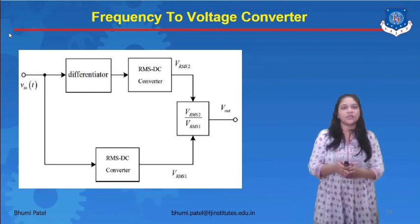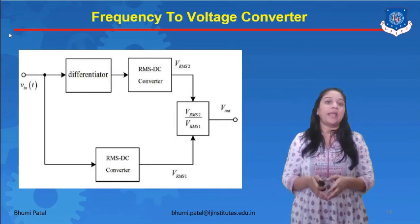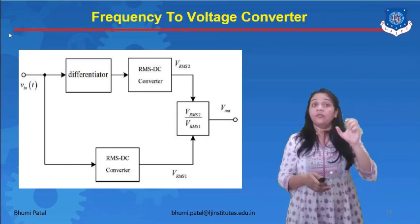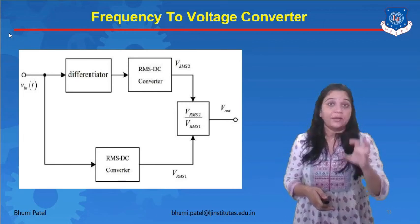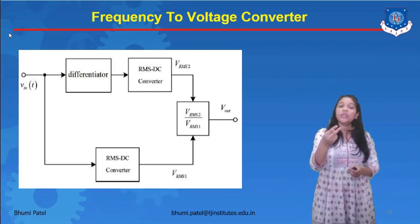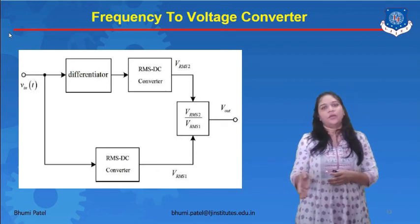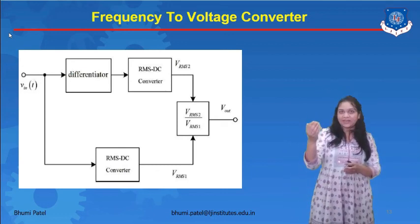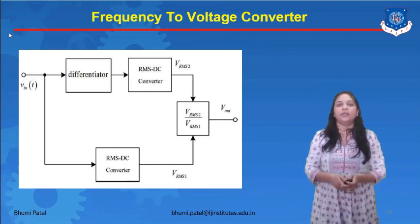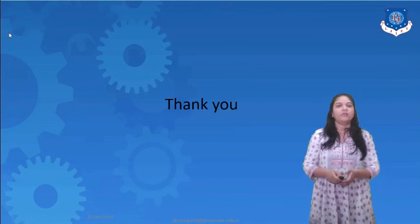The last converter is the frequency to voltage converter, which converts frequency into voltage. For this, we connect a differentiator and an RMS to DC converter. The output of the converter goes to V-RMS, and from that we get the output voltage. Thank you everyone.